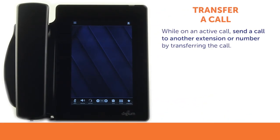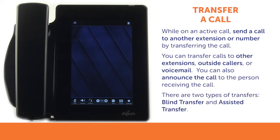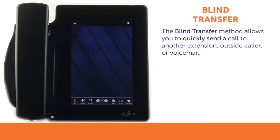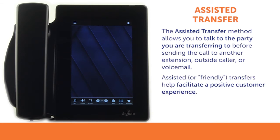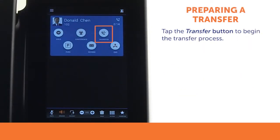While you are on an active call, you may need to send that call to another extension or phone number. You complete this task by transferring the call. You can transfer calls to other extensions, to outside callers, directly to voicemail, and even choose whether to announce the caller to the person receiving the call. There are two main types: a blind transfer sends the caller directly to the recipient, while an assisted transfer allows you to speak with the person receiving the transfer before completing it. Transferring a call always starts by tapping the transfer button on an active caller's call card.